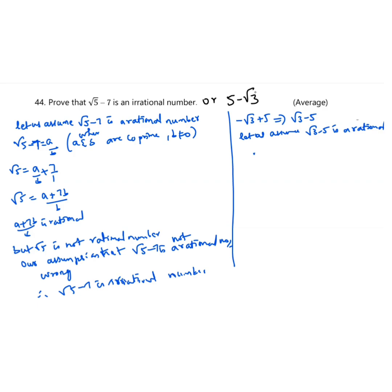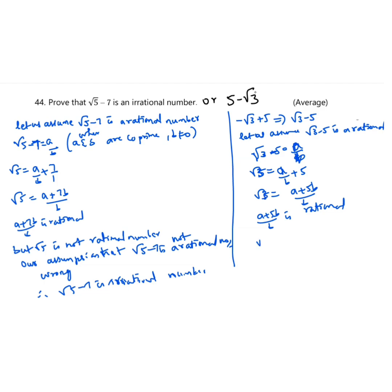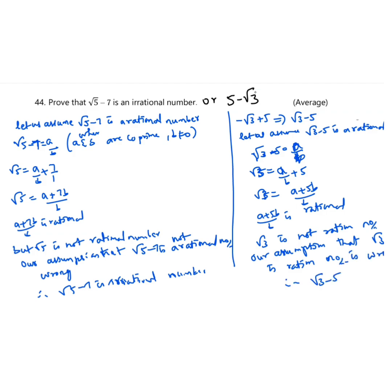Same way for the second problem: √3 - 5 = a/b. Then √3 = a/b + 5, which gives (a + 5b)/b. Since (a + 5b)/b is rational, but √3 is not a rational number, our assumption that √3 - 5 is rational is wrong. Therefore √3 - 5 is an irrational number.